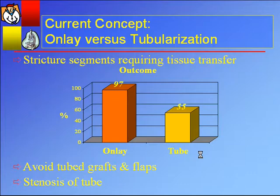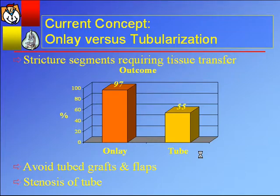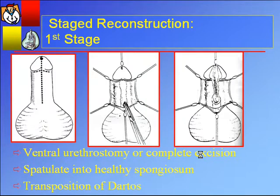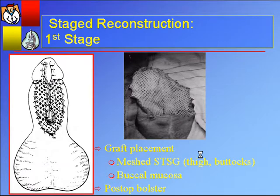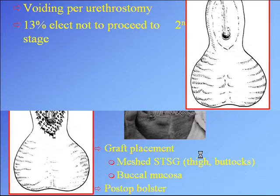Why would you do staged reconstruction for a patient with a severely obliterated or completely obliterated urethra? If you turn a graft or flap into a tube, you get about 55% long-term success rate; if you onlay, you generally enjoy about 97% success rate in comparable strictures. Tony Mundy described that you should avoid tubing grafts and flaps if at all possible. In staged reconstruction, the urethra is spatulated and marsupialized. You bring a skin graft onto the transposed gracilis for take — buccal grafts can also be used on either side. Patients have a post-op bolster and wait about six to twelve months for the graft to become well-healed and supple, avoiding a perineal urethrostomy for those six months, then elect to go on to the second stage.